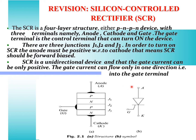First, let me review SCR basics. SCR is similar to a diode. It has an anode, a cathode, and additionally a gate terminal. If the gate doesn't have a signal, it behaves like a diode.